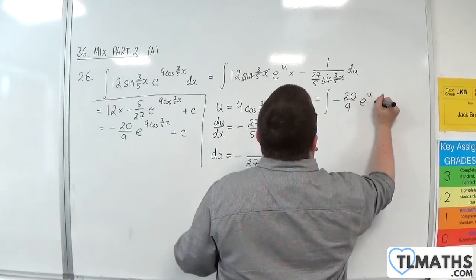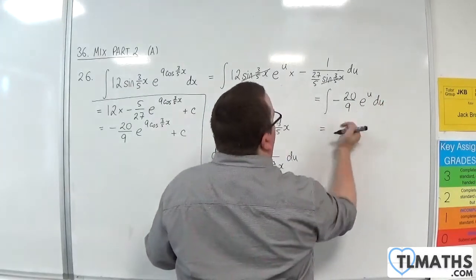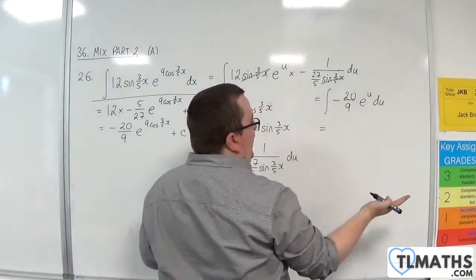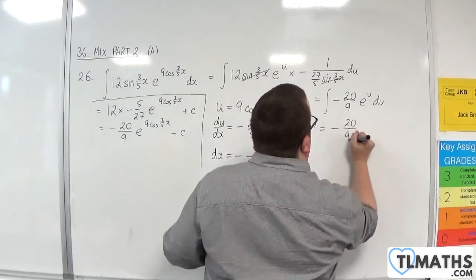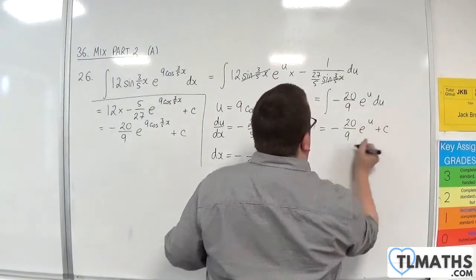Now, e to the u du just integrates to e to the u. So we have minus 20 over 9, e to the u, plus a constant c.